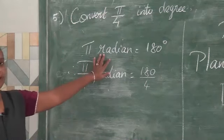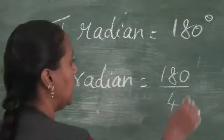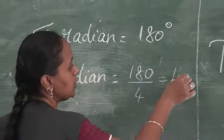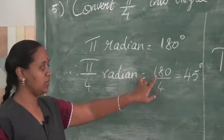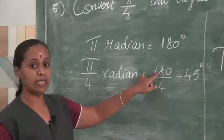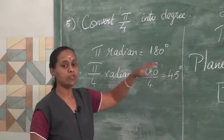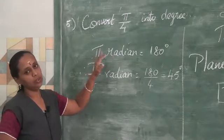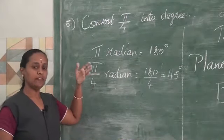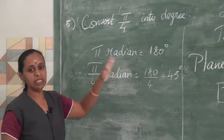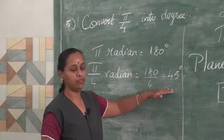To summarize: π radian = 180 degrees, so π/4 radian = 180/4 = 45 degrees. Do you understand all these problems? We have studied electric current, temperature conversions using Celsius, Kelvin, and Fahrenheit scales, and plane angle conversions between degrees and radians using the formula π radian = 180 degrees.